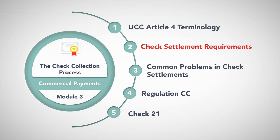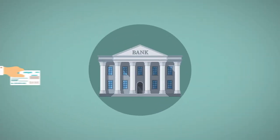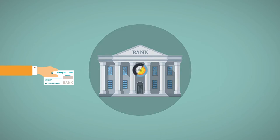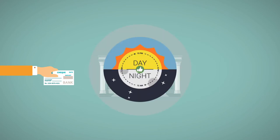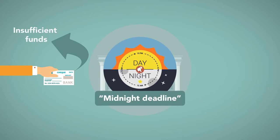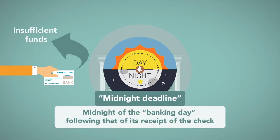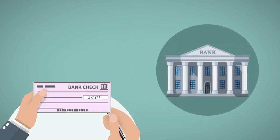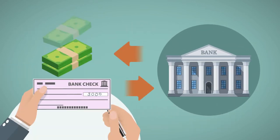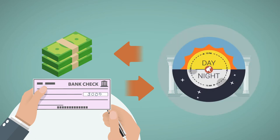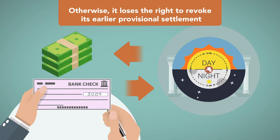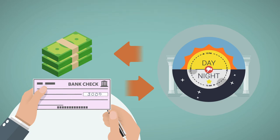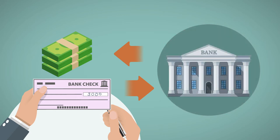Check Settlement Requirements. When a check is presented to a bank, the bank must decide whether to honor or dishonor — typically for insufficient funds — by the 'midnight deadline,' which is midnight of the banking day following that of its receipt of the check. The same is true if there was a provisional settlement when the check was first deposited: the bank must revoke this settlement by the midnight after the following banking day, otherwise it loses the right to revoke its earlier provisional settlement. Most checks are processed by the passage of the midnight deadline when the bank does not return the check.